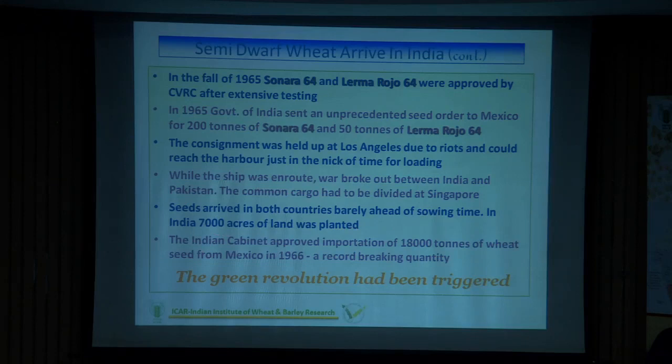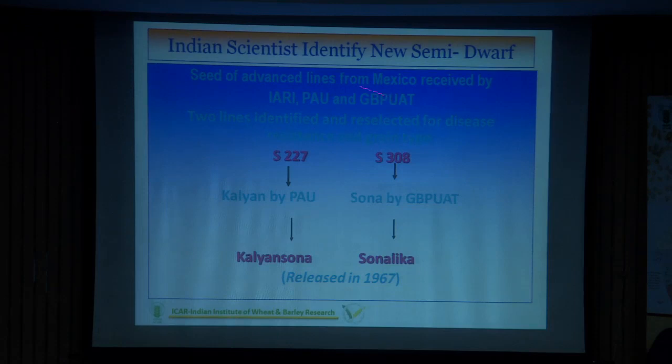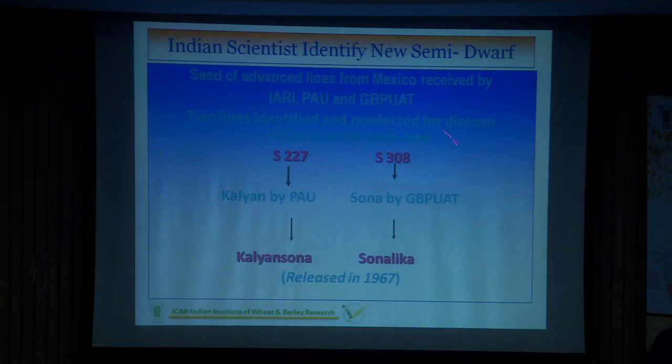Next year, the Indian cabinet approved the import of another 18,000 tonnes of wheat. This was a path-breaking story — developing those wheats and bringing them to India. Out of the lines we got from Mexico, tested at IARI, PAU Ludhiana, and G.B. Pant Pantnagar, two lines were identified at different locations based on data and released as varieties named Kalyan Sona and Sonalika.